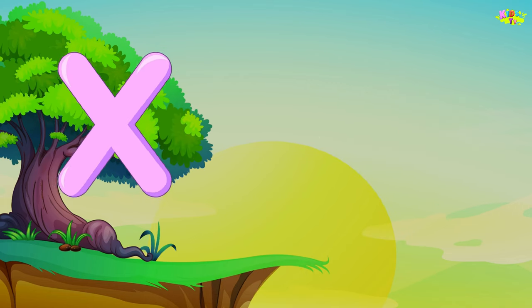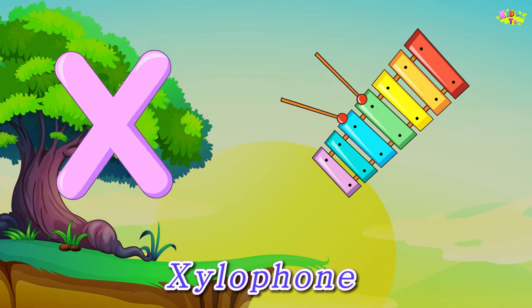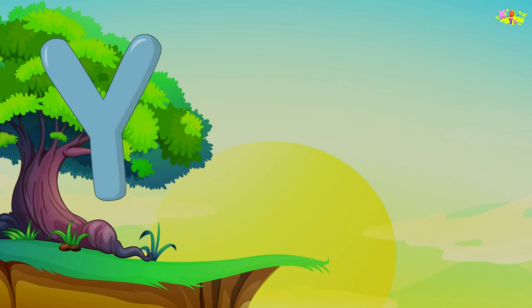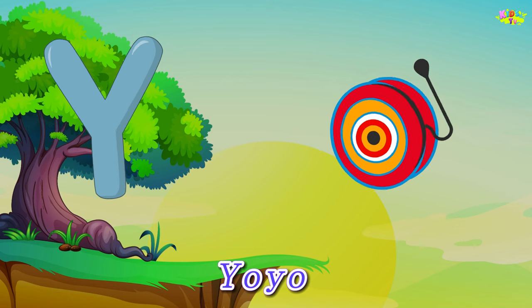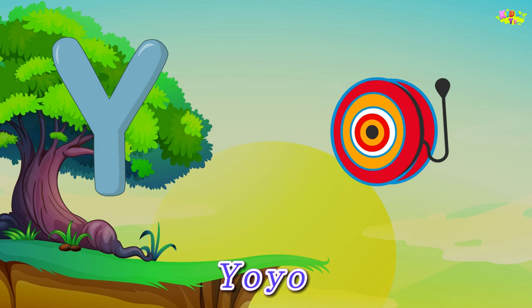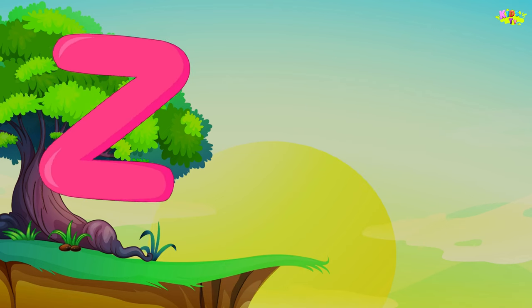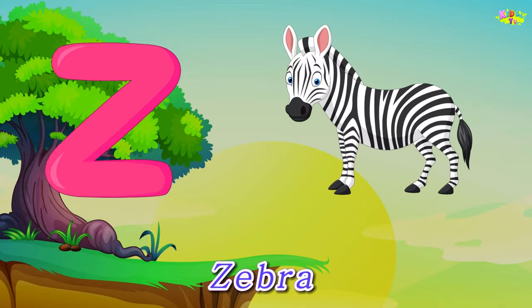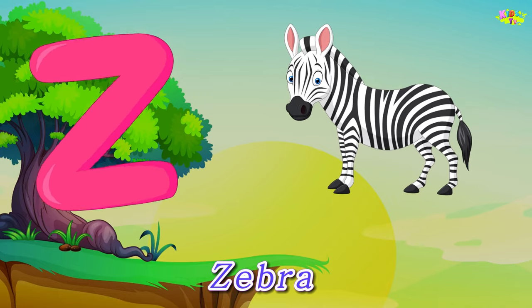X is for xylophone. X, xylophone. Y is for yo-yo. Y, yo-yo. Z is for zebra. Z, zebra.